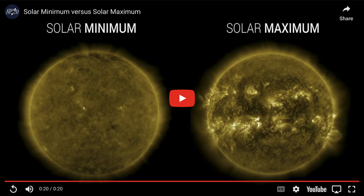How do we see that activity here on Earth? Well, those solar flares affect us because they send out streams of charged particles.